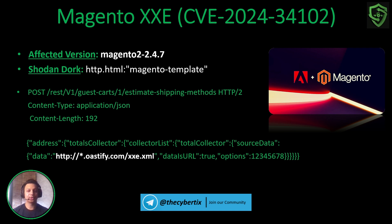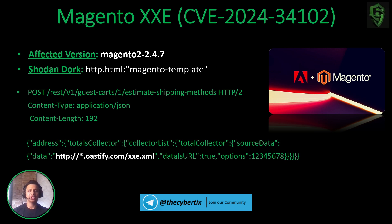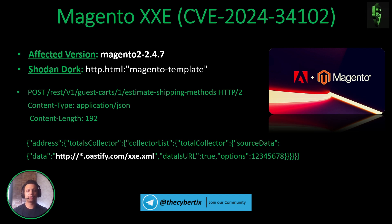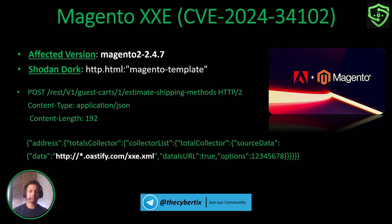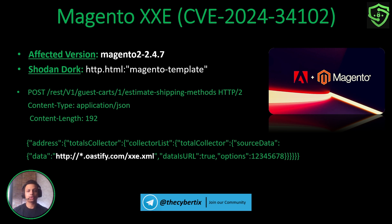The Shodan dork we're using is 'http.html:magento-template'. The general POST-based request we're going to perform targets the endpoint /rest/v1/guest-card-{id}/estimate-shipping-methods. The content type is application/json — not XML — because we are performing out-of-band interactions. In the POST body, we add our Burp Collaborator URL followed by /xxe.xml. This xxe.xml will be hosted on our attacker server, and through it we will call /etc/passwd — not from the target URL directly. That's how this attack works.